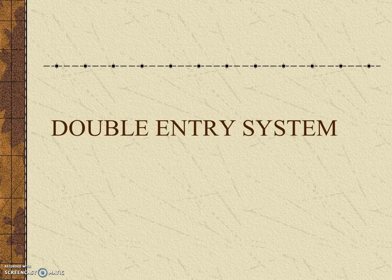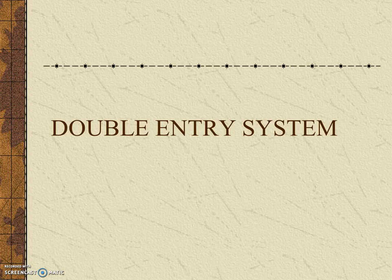Today we will discuss the double entry system. To understand the need for it, let's first look at the background. Some people have a habit of writing down records of their expenditures and income — recording on a daily basis how much was spent and what were the sources of income received. This is possible when the number of transactions is small, but for a business concern which is comparatively larger in size, recording transactions in a simple notebook is not feasible.